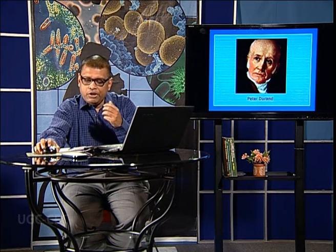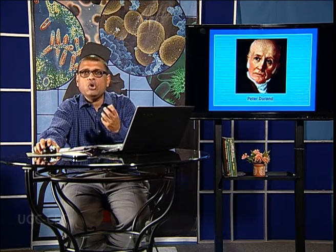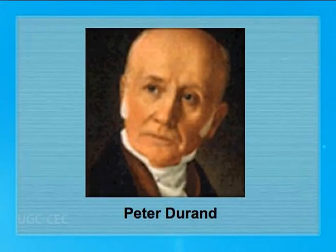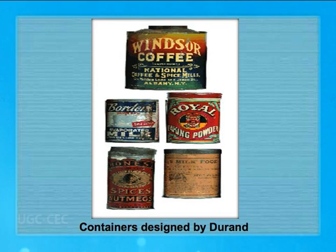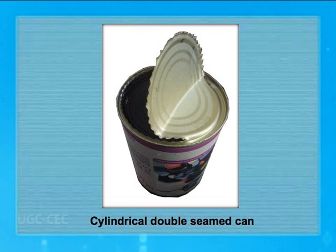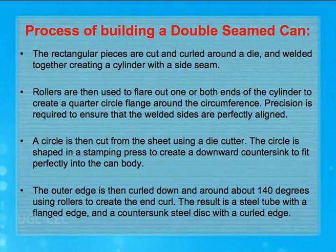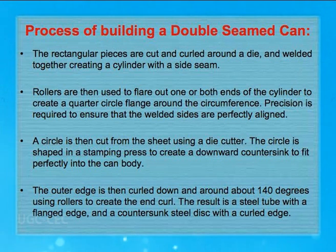The phenomenon by which food can be stored in a particular container without contamination was demonstrated by Peter Durand. He showed in 1810 that a particular tin container — which he called a double-seam container — if food is stored in it, it can be protected for a long time against bacterial contamination. The steps of making this double-seam can include cutting out rectangular pieces, using rollers, and then with a die cutter, circular pieces of metal are added and sealed on both sides, making a perfectly sealed container.